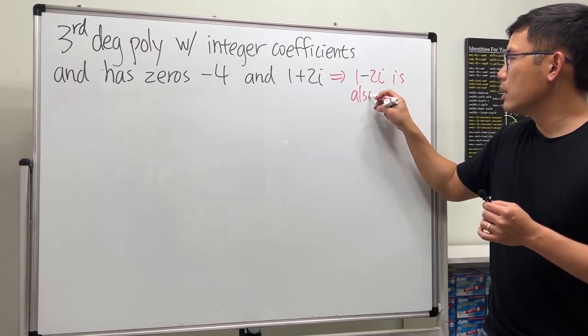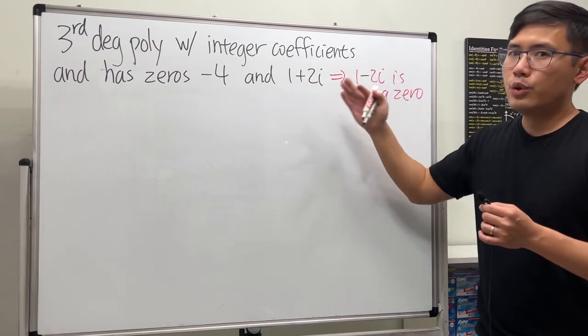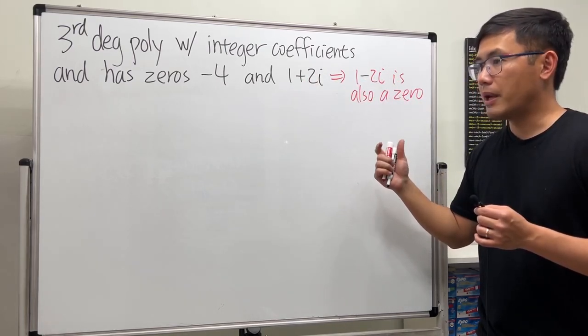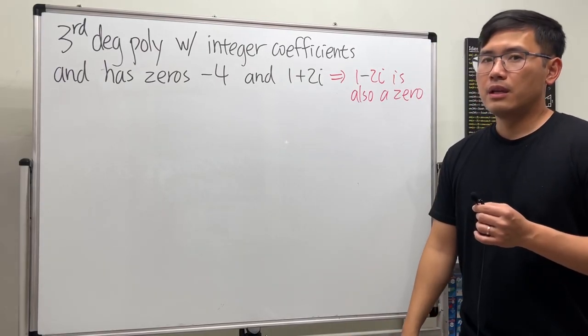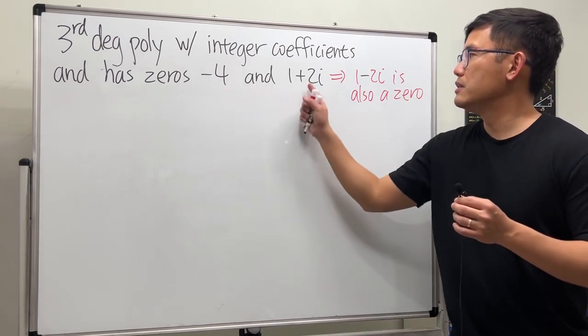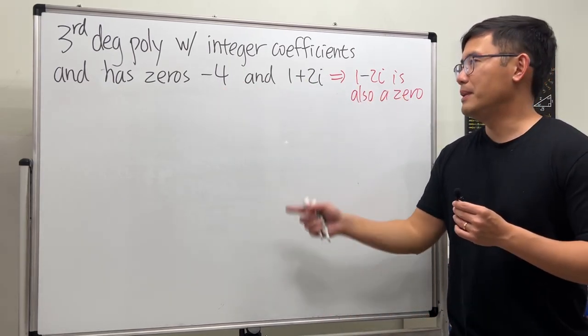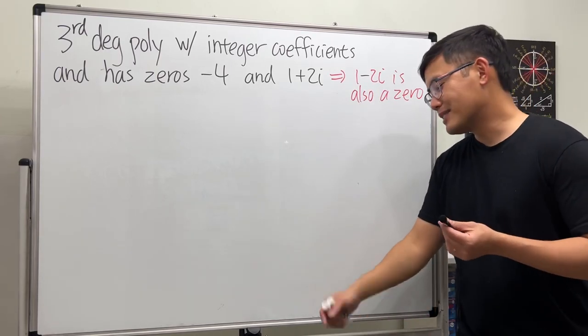When you have this, its conjugate is also a zero. Zeros come in complex pairs, especially when we have a polynomial with integer coefficients. You might be wondering how come the question didn't just give us all three together. I don't know, maybe they just want to test us on this.